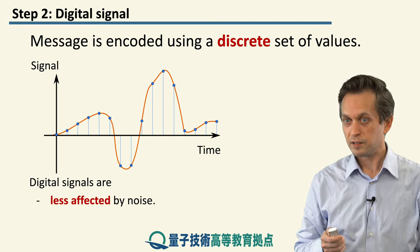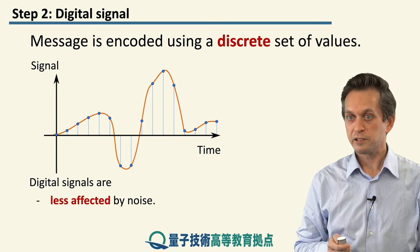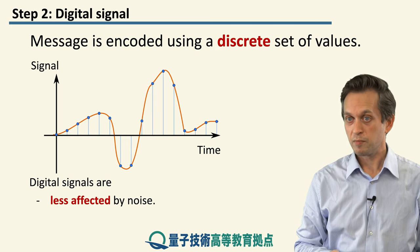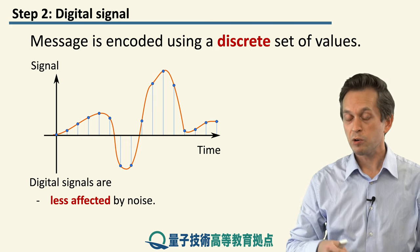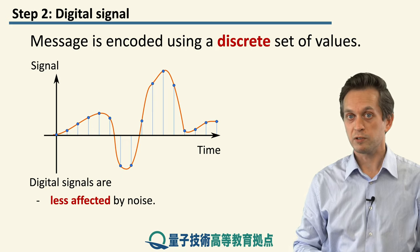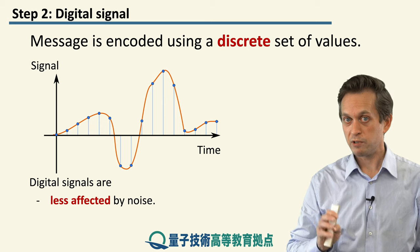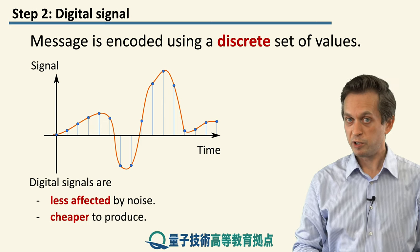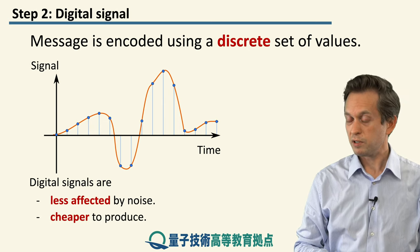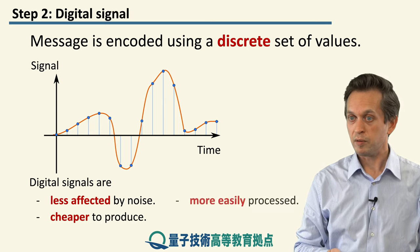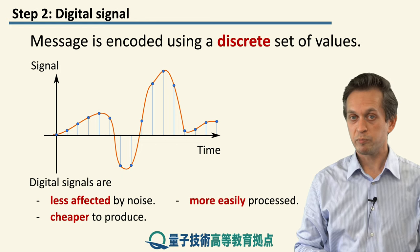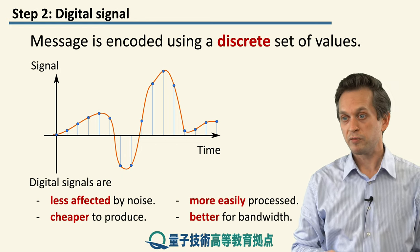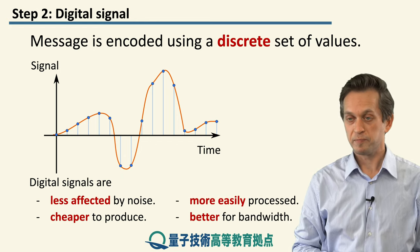On the other hand, digital signals are less affected by noise, because we don't have a smooth spectrum — we only have discrete values. They are also cheaper to produce, more easily processed, and better for bandwidth.